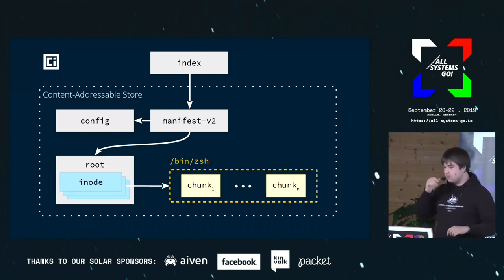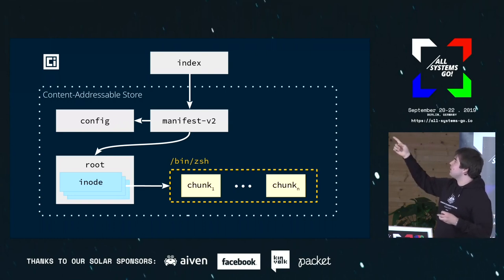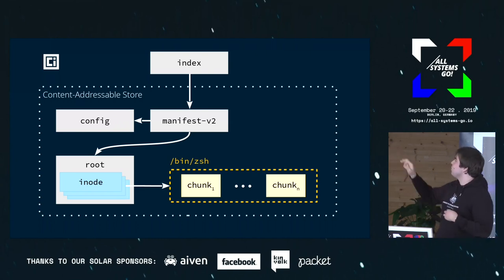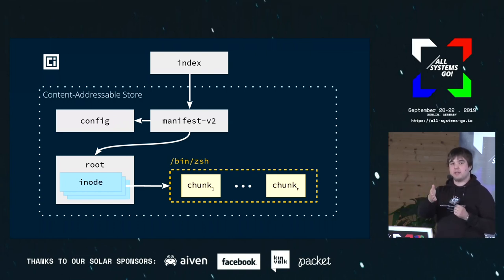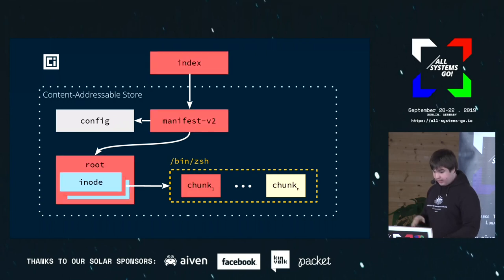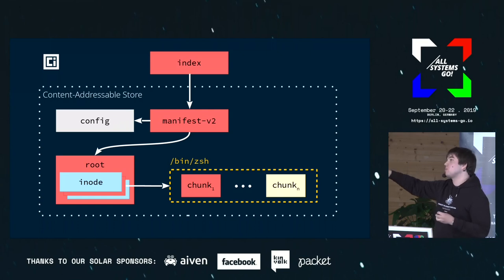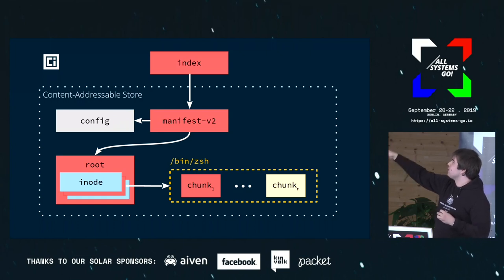The idea is to go from the existing structure to this new one: we still keep the index and config, but rather than layers, we expose all inode structures to OCI and each file gets chunked up. This is non-avalanching: if you change a single chunk, you regenerate the root JSON blob which has pointers to everything, but you don't have to have an entire copy of ZSH, ping, and everything else inside your image.